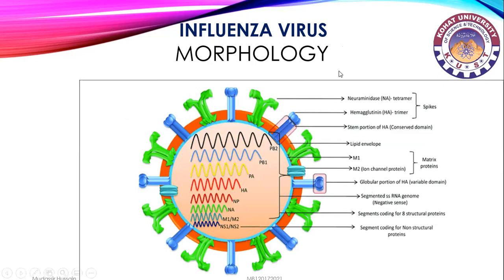This is the diagrammatic morphology structure of influenza virus showing the neuraminidase and glycoproteins around the envelope. The function of NA glycoprotein is to cut like scissors, and the function of HA protein is to attach to host cells.